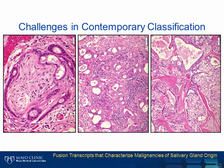This series of micrographs highlights the inherent difficulty in distinguishing high-grade salivary malignancies from one another: adenosquamous carcinoma on the left, salivary duct carcinoma in the middle, and mucoepidermoid carcinoma on the right. The overall rarity and histomorphologic overlap between salivary gland tumors makes classification difficult, so cytogenetic and/or molecular testing are occasionally indicated.